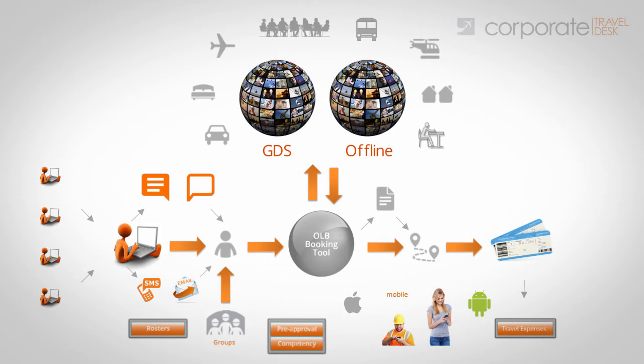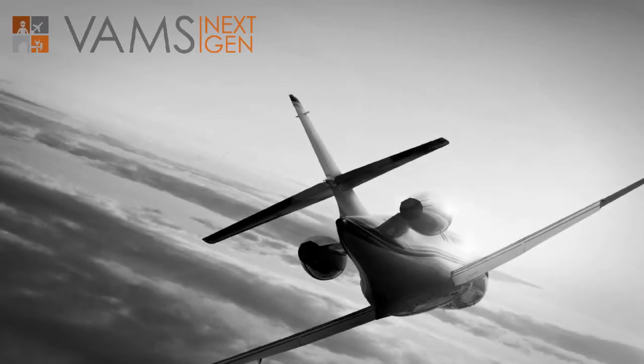Finally, a booking progress dashboard lets you see where each booking is at and what needs to happen next. The corporate travel desk: an OBT that supports group bookings, offline content, traveler quality assurance, SMS and email alerts, an end-user booking request mode, a stakeholder chat room, and an expense management tool — all for both mobile and desktop. VAMS: simply better software.